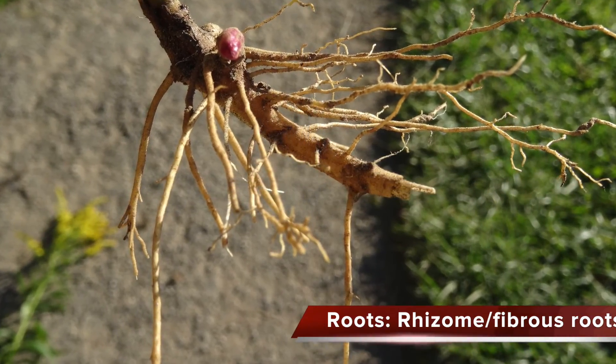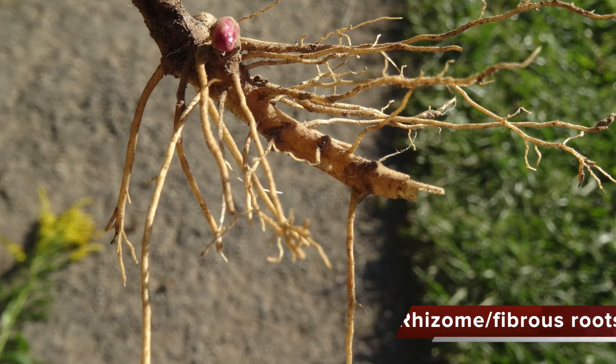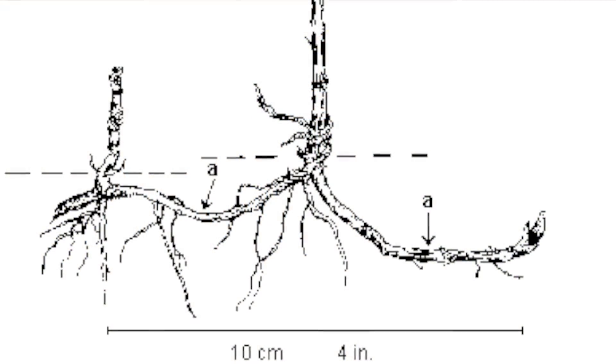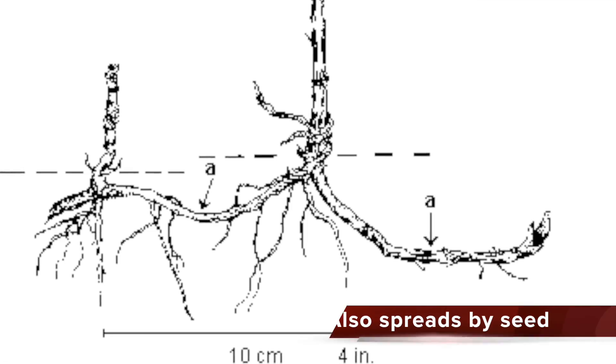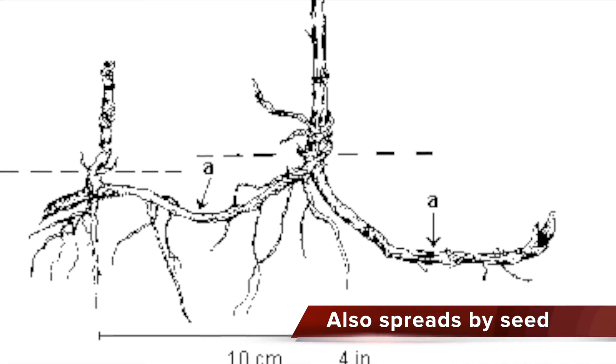Canada goldenrod has rhizomes and fibrous roots, which allow it to form large dense patches. In addition to rhizomes, goldenrod can also spread by wind-dispersed seeds.